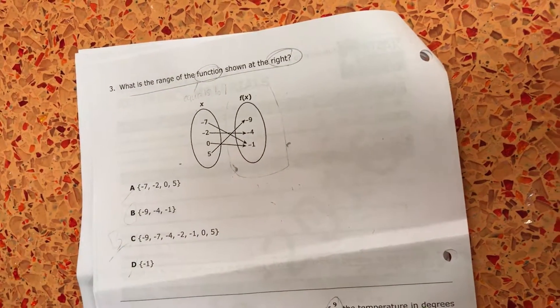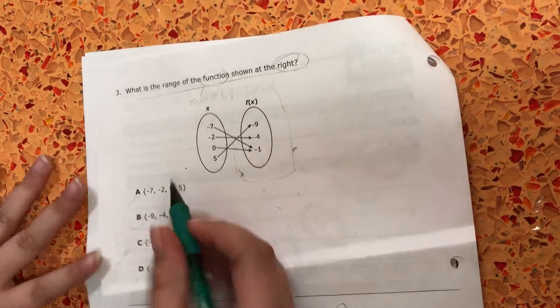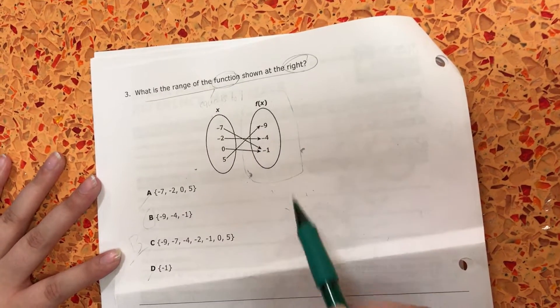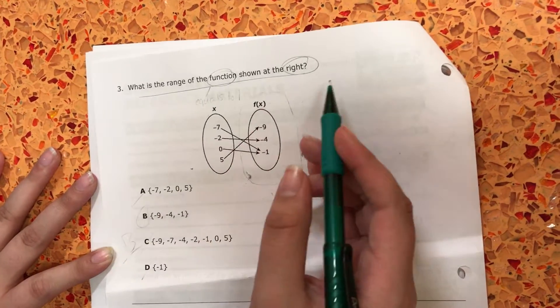So question number three says, what is the range of the function shown at the right? So you have to get your y-axis because it's on the right.